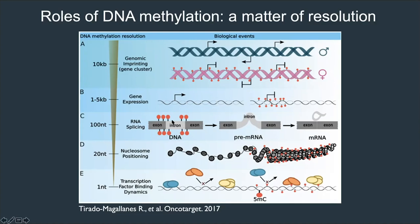At higher resolution, we can study the interplay between DNA methylation and RNA splicing events. DNA methylation can predispose RNA toward certain splicing events — this is still an early area of study. At 20 base pair resolution, we can integrate DNA methylation patterns with nucleosome positioning, seeing clear patterns in heterochromatin versus euchromatin. And now with current sequencing technology, we can study DNA methylation at single base pair resolution to understand the interplay between transcription factor recruitment and DNA methylation. Some transcription factors prefer methylated DNA, some prefer unmethylated, and some bind regardless of methylation level.